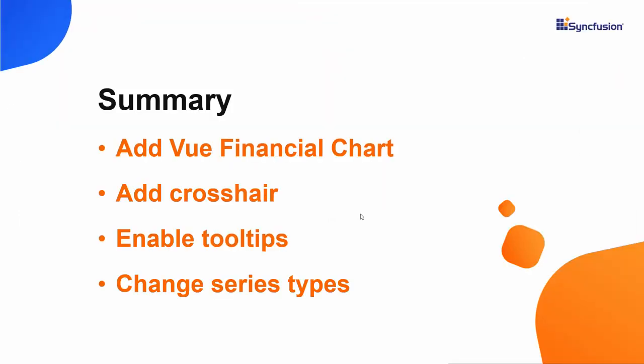In this video, we saw how to render financial chart types in Vue, namely the high-low, open-high-low-close, and candle charts with their built-in features. We also saw how to enable a few of their basic features like tooltips and crosshairs. In my upcoming video, I will explain how to add the Syncfusion Vue radar and polar charts to a Vue application. If you would like to see a working example of what I discussed in this video, you can download one from the GitHub link shared in the description below. I have also included a link in the description where you can check if you qualify for our community license, which gives you a free license key for our entire Vue component suite. If you found this video useful, don't forget to click the like button and subscribe to our channel. Thanks for watching.